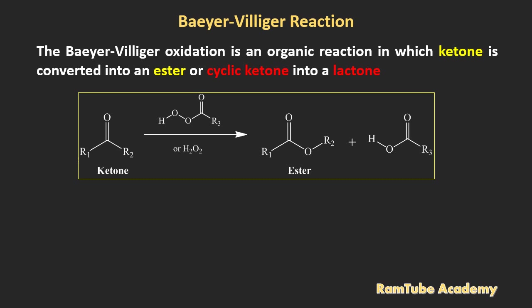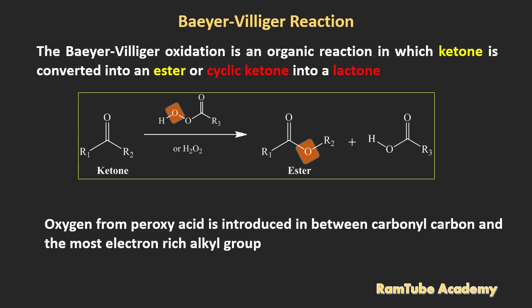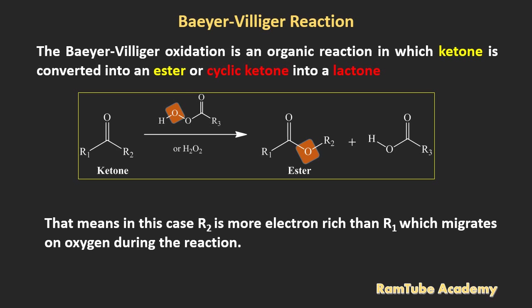In this reaction if you carefully observe the reactant ketone and the product ester, you will find oxygen from peroxy acid is introduced in between carbonyl carbon and the most electron rich alkyl group. That means in this case R2 is more electron rich than the R1 which migrates on oxygen during the reaction.